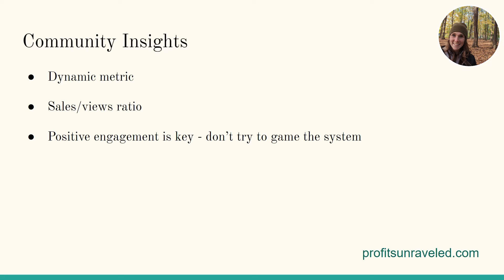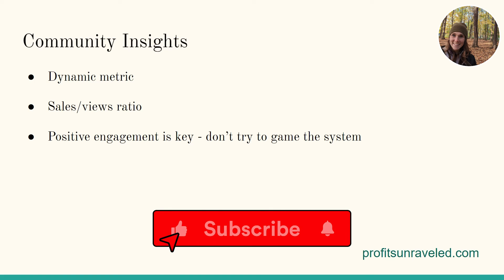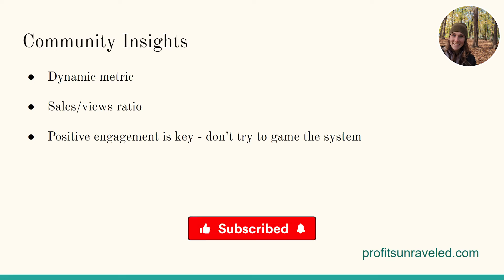Community insights: I've gone through a bunch of threads in the Zazzle community and looked at what people are talking about when it comes to Z rank. The truth is no one really knows — it is a little bit of a mystery. But here are some things we've figured out. Z rank is a dynamic metric, meaning it's changing all the time. If you upload a bunch of products your Z rank may drop; if you delete a bunch it can also be affected. The time of year can affect Z rank, especially if you have a seasonal shop. The sales-to-views ratio and sales-to-product ratio come up a lot in the community. And importantly, we want to be driving positive engagement — we don't want to try to game the system. Build your shop holistically and sustainably.